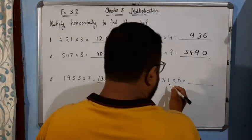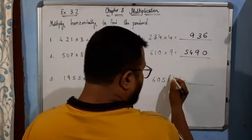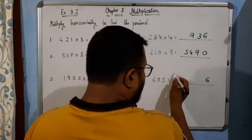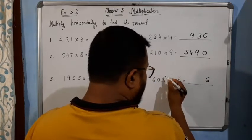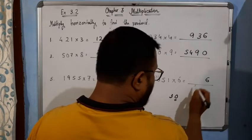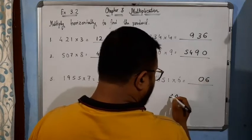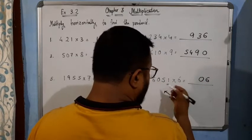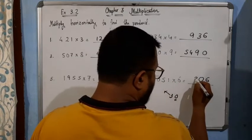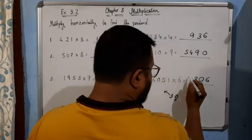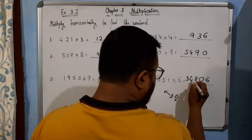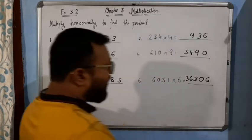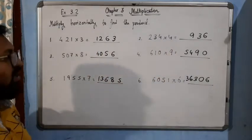Now the last question. 6 times 1 is 6. 6 times 5 is 30, means 3 and 0 — we will take 0, 3 will be carried over. 6 times 0 is 0, plus 3 means 3. 6 times 6 is 36, we will write 36. So the answer will be 36,306.